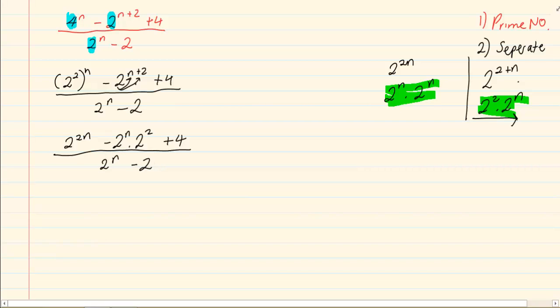Now let us separate 2 to the power of 2n. We now have 2 to the power of n times 2 to the power of n minus 2 to the power of n times 2 to the power of 2 plus 4, all over 2 to the power of n minus 2.